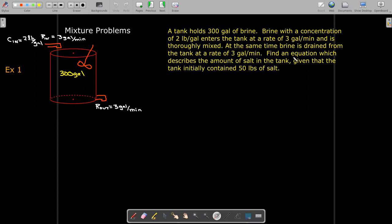And at the same time, the brine after it's thoroughly mixed is being pumped out at a rate of 3 gallons per minute. And so we'd like to find an equation. We're not going to necessarily solve it at this point. But I think we can. So let's see if we do that. We're going to find an equation that describes the amount of salt in the tank, given that the tank initially contains 50 pounds of salt. So we have an initial value problem here.